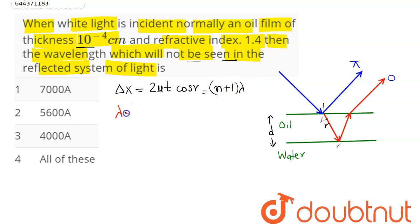Lambda comes as 2μt cos r divided by (n+1). Substituting the values: 2 times refractive index 1.4, thickness 10^-4 cm, which is 10^-6 meter.